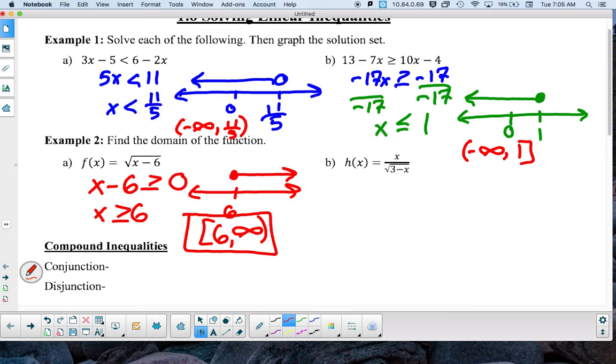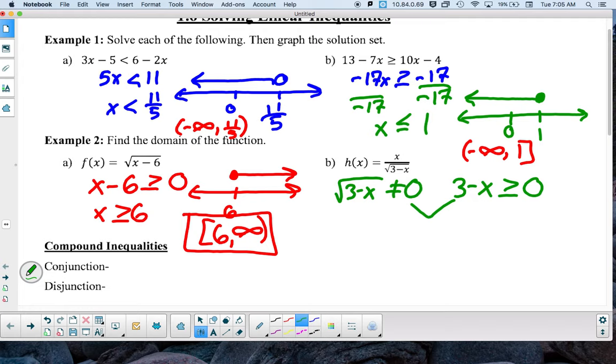First off, we know that the square root of 3 minus x cannot be 0. And we also know that 3 minus x has to be greater than or equal to 0. Now because we have both of these, we could solve them each individually, but basically we can also just do that 3 minus x has to be strictly greater than 0.